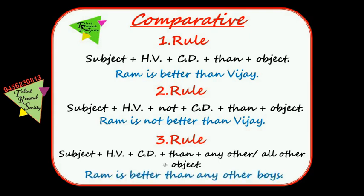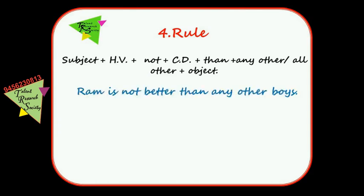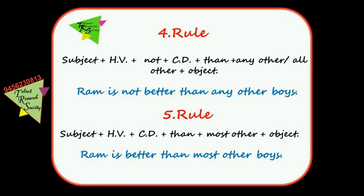Comparative Rule 4: Subject + helping word + not + comparative degree + than + any other / all other + object. Example: 'Ram is not better than any other boys.' Rule 5: Subject + helping word + comparative degree + than + most other + object. Example: 'Ram is better than most other boys.'